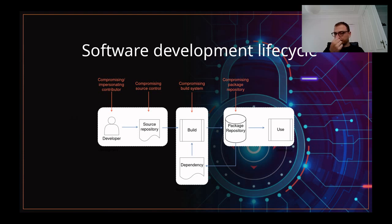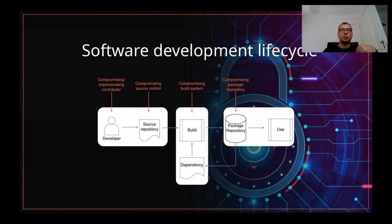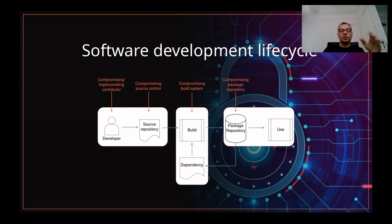So if we look at the attack vectors on the software development life cycle, we can see those three phases. On the left you have the development phase — that's when developers write the code. And obviously that creates the very first attack vector: you can compromise or impersonate the developer. If that's the case, you will be able to push code to the source control, to the source repository, because when you write code most of the time you push it to a source repository — probably the most well-known being GitHub. If you manage to impersonate a contributor, you can push malicious code in their name.